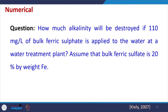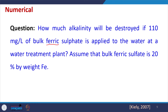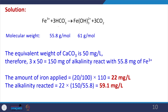A numerical question: how much alkalinity will be destroyed if 110 mg/L of bulk ferric sulfate is added to a water treatment plant, where ferric sulfate contains 20% by weight of Fe? To solve this, we look for the reactions of ferric sulfate with alkalinity — alkalinity may be bicarbonate or carbonate. We find out the molecular weights of the respective carbonates as well as ferric hydroxide, with the equivalent weight of calcium carbonate being 50 mg/L.